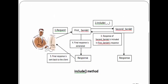This is the flow diagram for the include method. First of all, a client will be sending a request to the first servlet. Then the first servlet will make use of the include method. The response will be generated by the second servlet, and that response will be included in the first servlet's response by making use of the include method. Like this, the final response will be generated and sent back to the client.